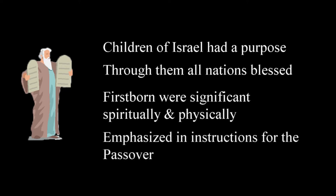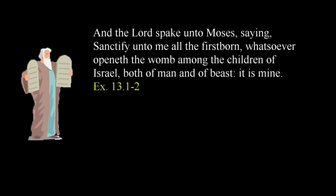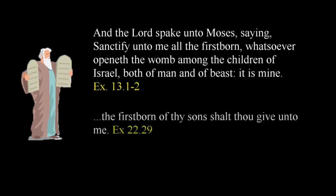The children of Israel were selected by God to carry out a purpose that one day would bless all nations. Their firstborn represented the hope of freedom under the leadership of Moses and the Lord. This fact is further emphasized in instructions given to Moses during preparation for the first Passover. The Lord spake unto Moses, saying, Sanctify unto me all the firstborn, whatsoever openeth the womb among the children of Israel, both of man and of beast, it is mine, in Exodus 13:1-2. God commands, The firstborn of thy sons shalt thou give unto me, in Exodus 22:29. The sanctification of the firstborn was to be a perpetual observation among the children of Israel.